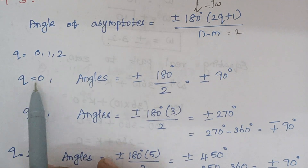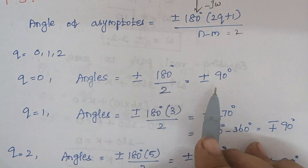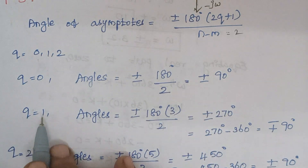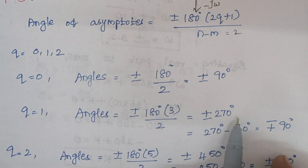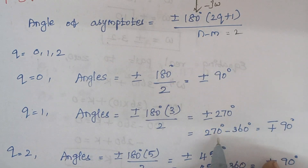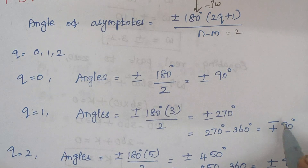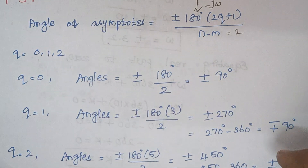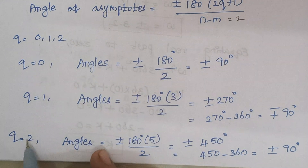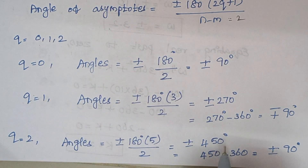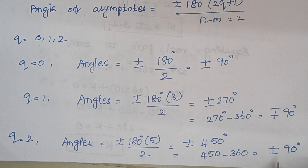For q = 0, the angle is ±90°. For q = 1, the angle is ±270°; subtracting 360° gives ±90° again. For q = 2, the angle is 450°; subtracting 360° gives ±90°. So the asymptote angles are ±90°.